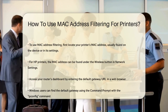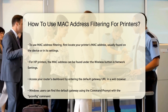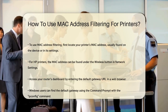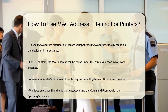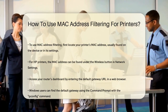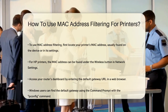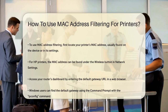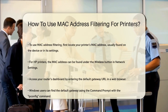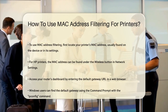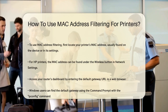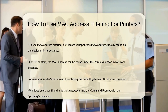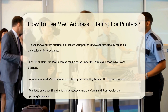Next, log into your router's dashboard. You can do this by typing the default gateway URL into your web browser. For Windows users, open the command prompt, type ipconfig, and look for the default gateway. For Mac users, go to System Preferences > Network, click on your connection, and then go to the Advanced TCP/IP tab to find the default gateway.